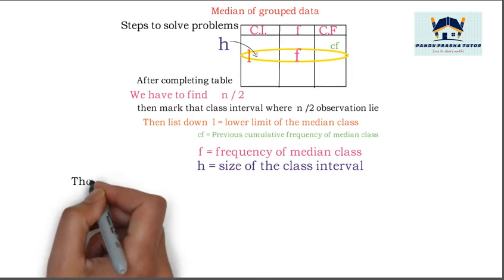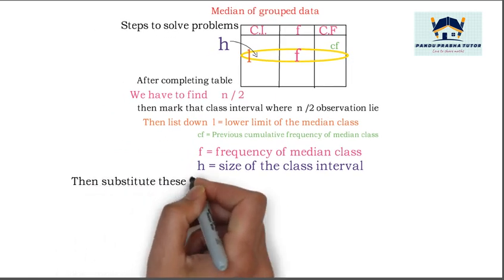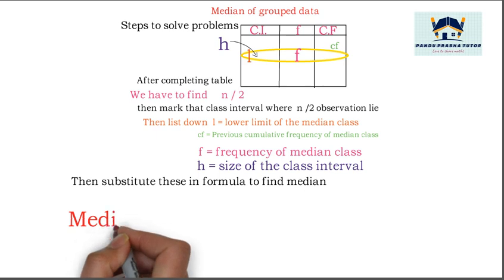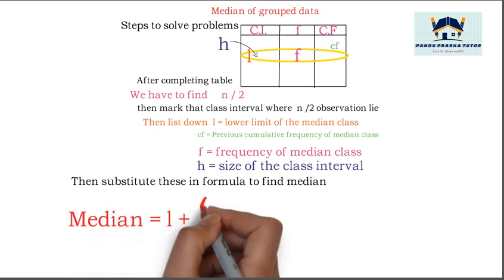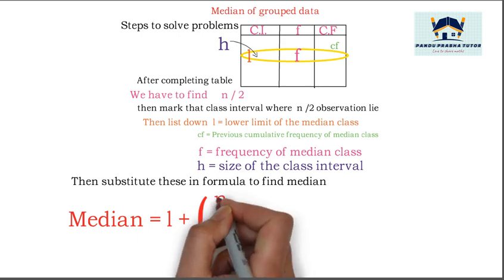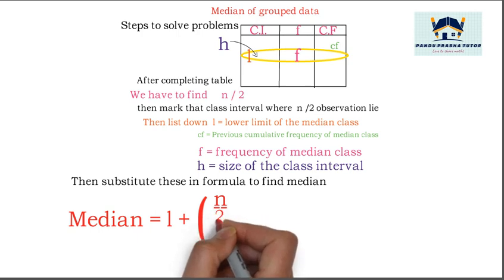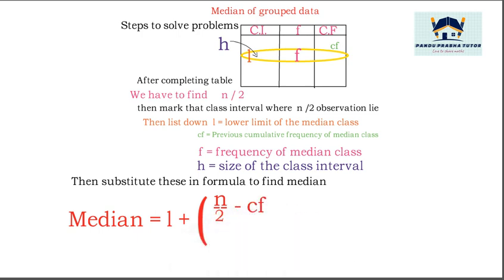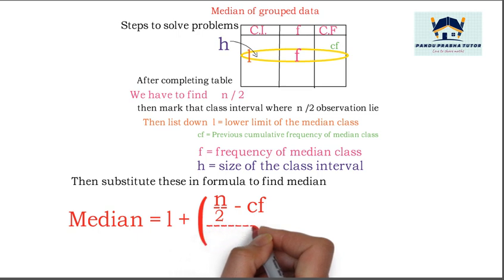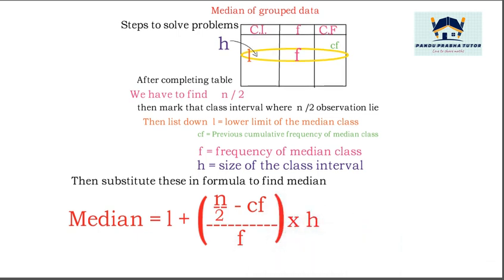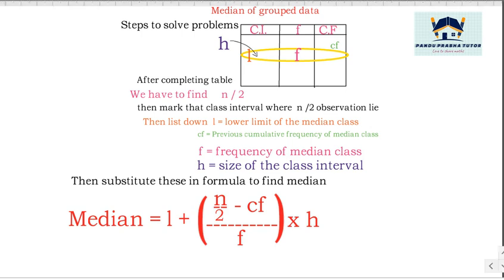Then substitute these values in the formula to find the median. The formula is: Median = l + [(n/2 − cf) / f] × h. Using this formula we have to find the median of the grouped data.